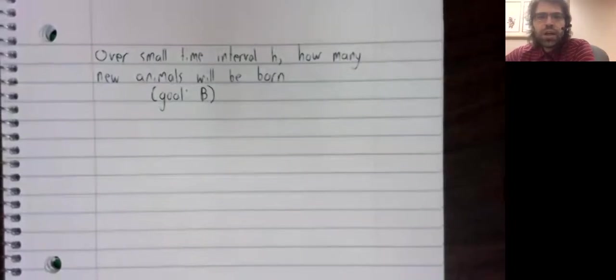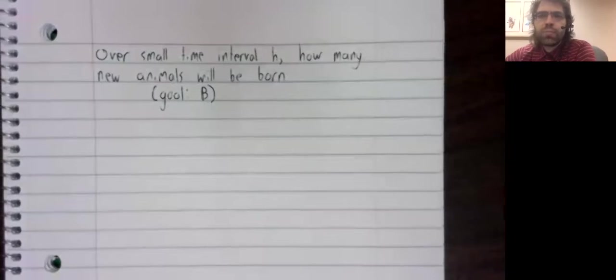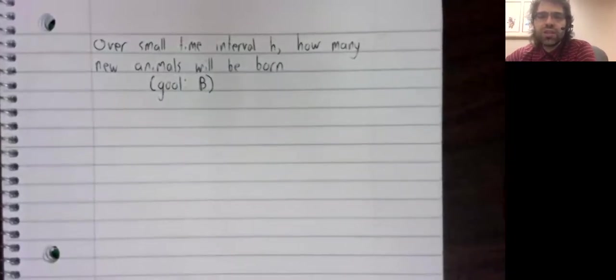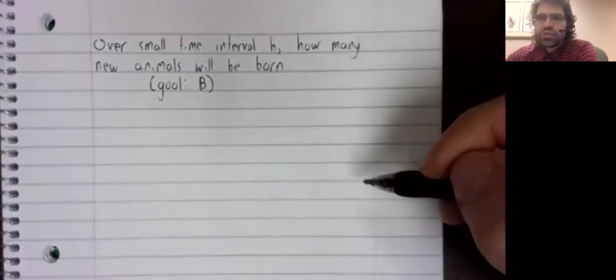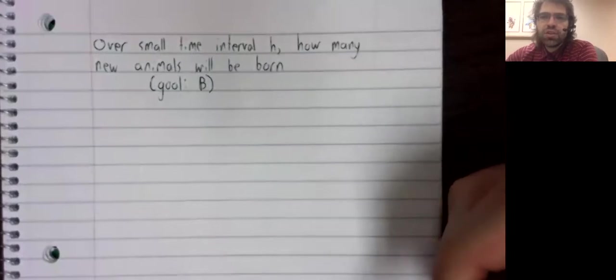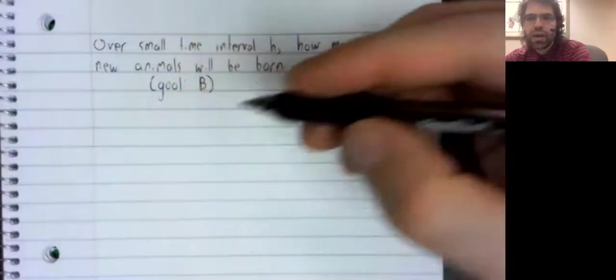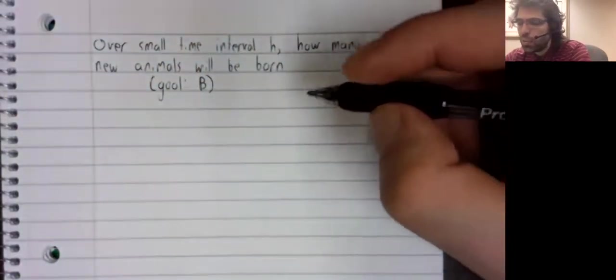For simplicity, we'll ignore gestation. We'll think of birth as an instantaneous process. Also, for simplicity, let's assume that the population is split half and half into male and female animals.